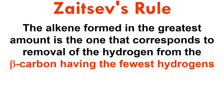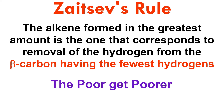Therefore, we can restate Zaitsev's rule as follows: the alkene formed in the greatest amount is the one that corresponds to removal of the hydrogen from the beta-carbon having the fewest number of hydrogens. In other words, we can say the poor get poorer — the carbon with the poorest number of hydrogens tends to lose hydrogens.